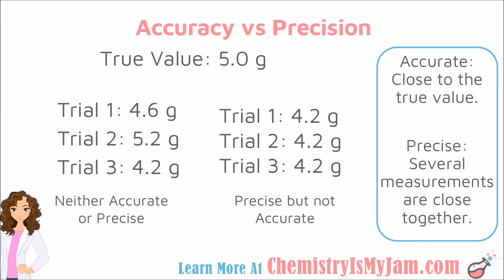The scenario on the right has all three measurements the same, so that makes them precise. However, they were not correct measurements, so they were not accurate. This is a case where they were precise but not accurate. So, accurate means close to the true value, and precise means consistent — several of the measurements are close together.